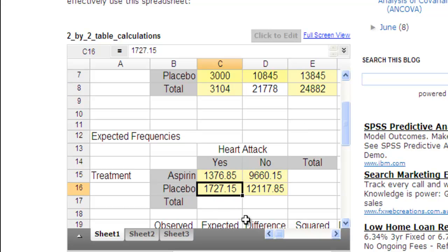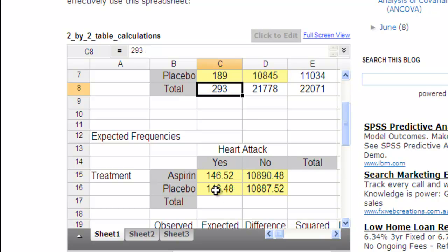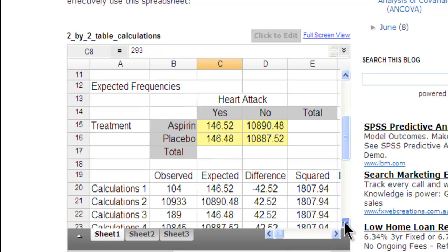Or it should change quickly. See how quickly that changes? So it all changes. Let me change it back. 189 is how many placebo observations there are, and then it changes it back. So these are the expected cell frequencies.